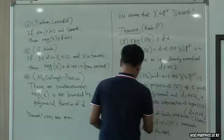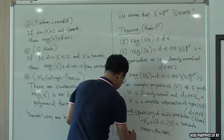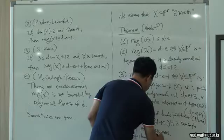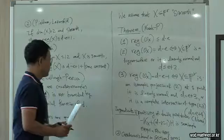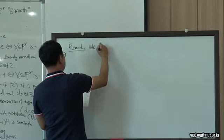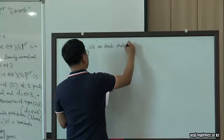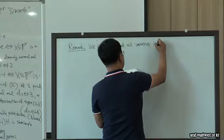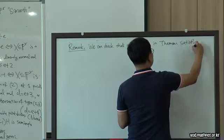To attack these few cases, we also use the Castelnuovo bound on sectional genus. We can check that all varieties appearing in this theorem satisfy the Eisenbud-Goto conjecture.